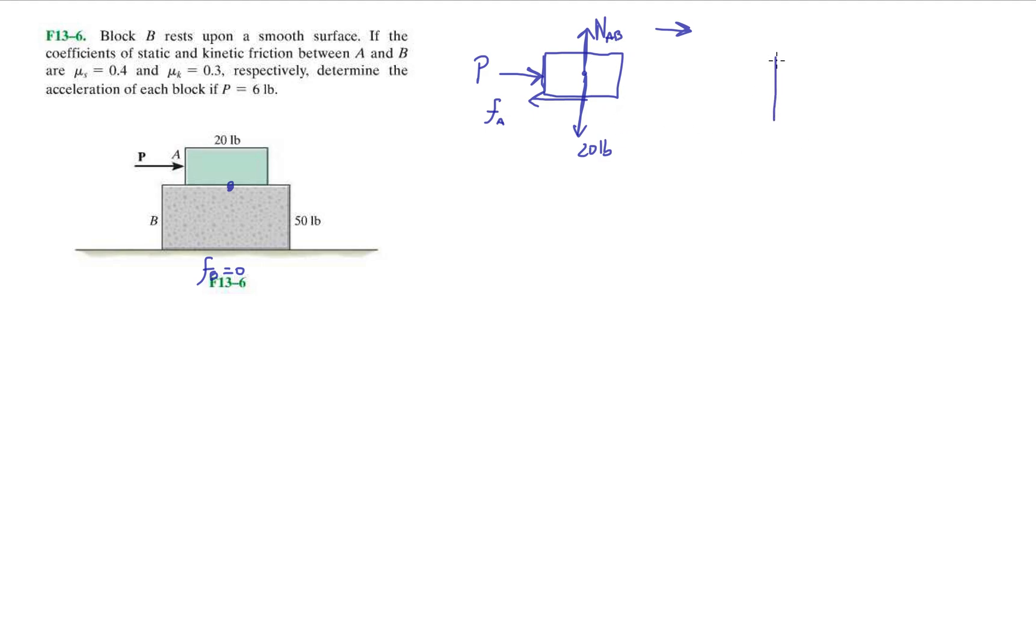If we draw a free body diagram of block B, we have to recognize that there's going to be a third law pair. What's that third law pair? The normal force done on A by B is going to be the normal force done on B by A. So remember first semester physics, third law pairs.